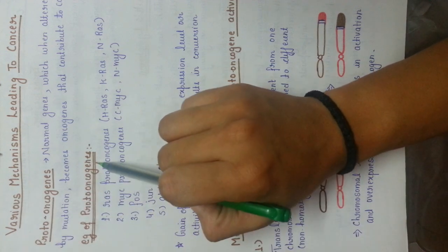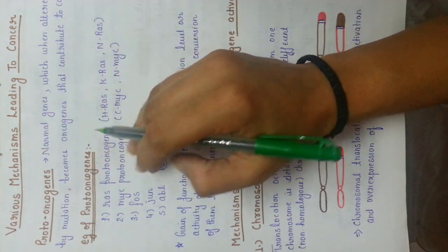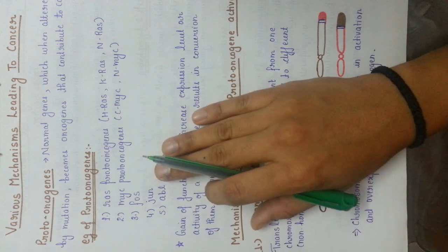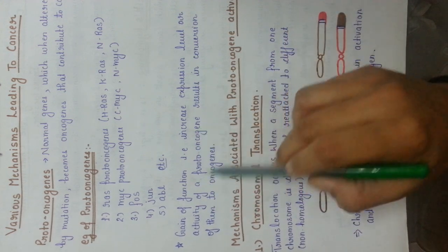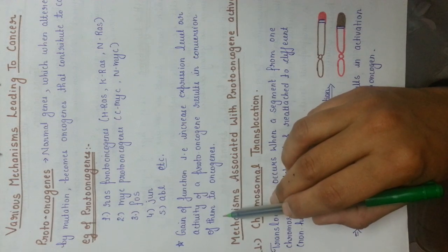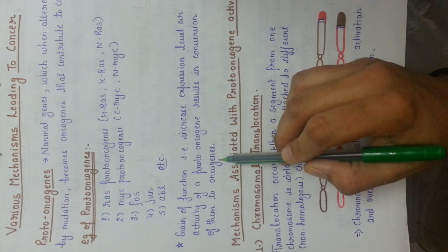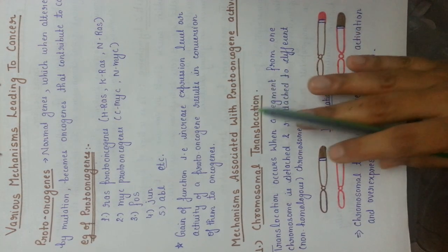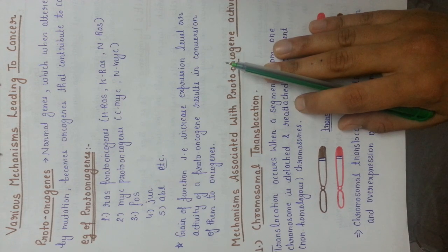Basically, gain of function will take place in these cases. What does gain of function mean? It means increased expression or activity of these proto-oncogenes, which will ultimately lead to the generation of cancer. The gain of function — that is, increased expression level or activity of the proto-oncogenes — results in their conversion into oncogenes, which are the cancer-causing genes. There are also mechanisms related to tumor suppressor genes or cell division mechanisms.